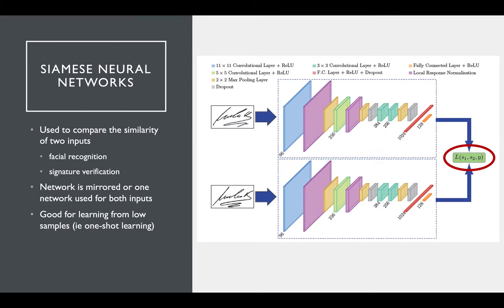A Siamese neural network doesn't need to learn a way to represent every signature. Instead, it can just be fed in matching and non-matching signatures to learn how best to calculate the distance so that signatures from the same person are close together.